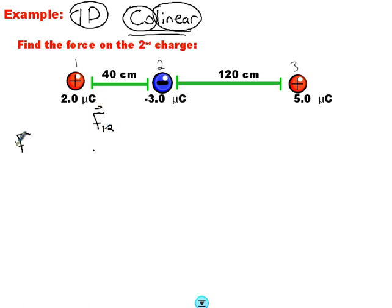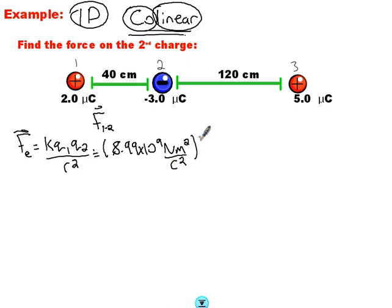So to calculate that, here comes Coulomb's law. The electric force is K, Q1, Q2 over R squared. For K, we're putting in Coulomb's constant, 8.99 times 10 to the 9. Put those units in, Newton meter squared per Coulomb squared.